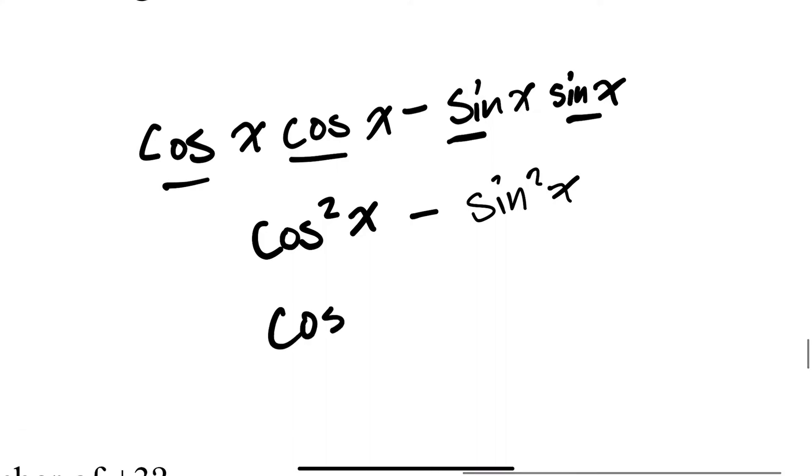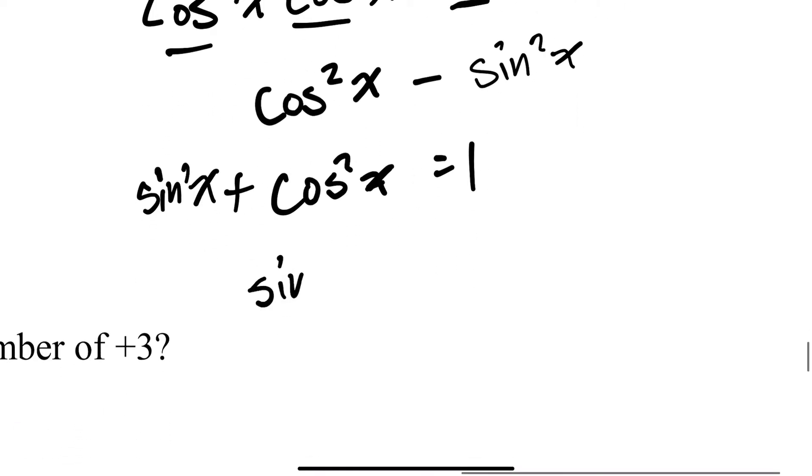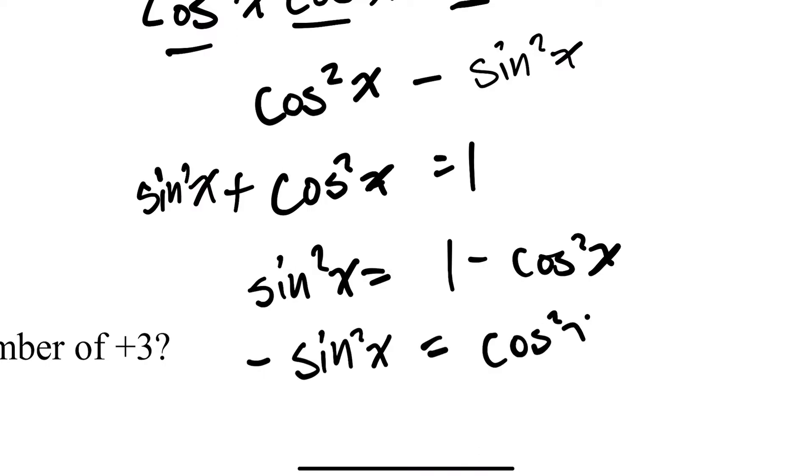And since cosine squared x plus sine squared x equals 1, sine squared x equals 1 minus cosine squared x. And therefore, negative sine squared x is cosine squared x minus 1.